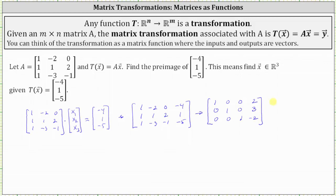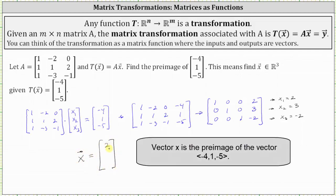So the first row indicates that x sub one is equal to two. The second row indicates that x sub two is equal to three. The third row indicates that x sub three is equal to negative two, which means vector x equals the vector two, three, negative two.